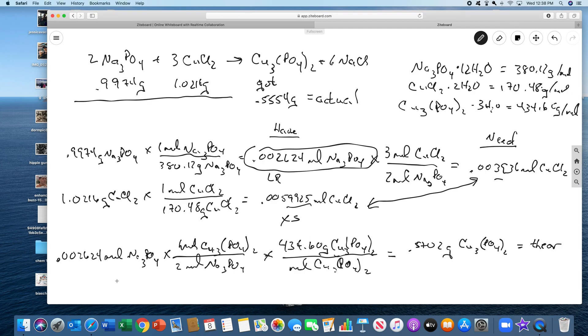Finally, the percent yield in this case is my actual over my theoretical times 100. My actual was 0.5554 grams from the experiment. My theoretical is 0.5702 grams times 100. 100 does not change the sig figs, so that means I have 97.41% percent yield.